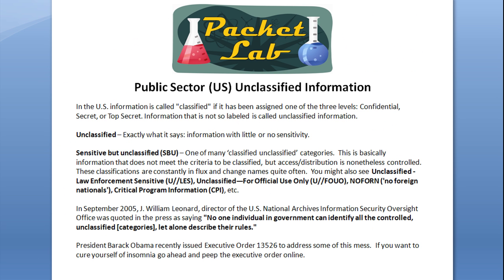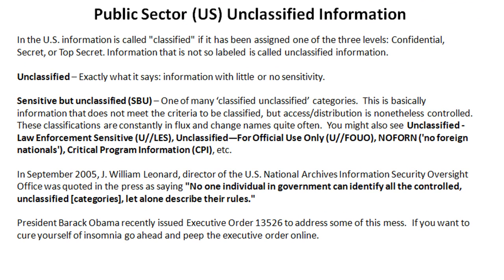In the U.S. public sector, information is called classified if it reaches one of the levels of confidential, secret, or top secret. Information that is not so labeled is called unclassified information — exactly what it says: information with little or no sensitivity.